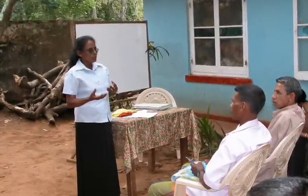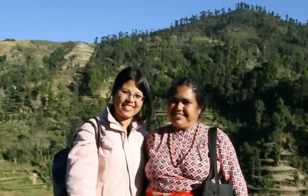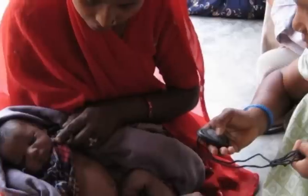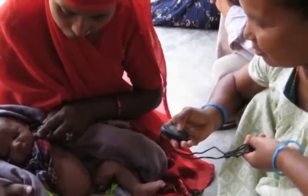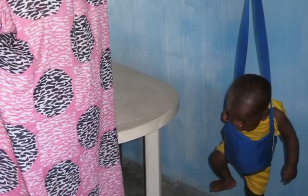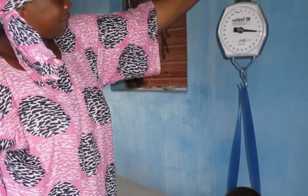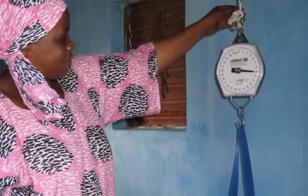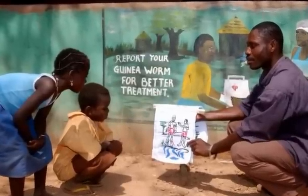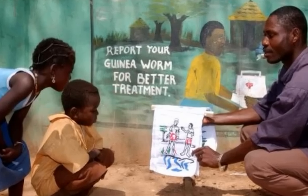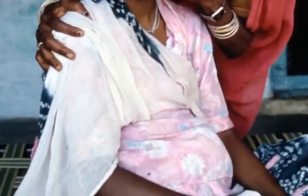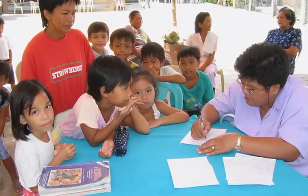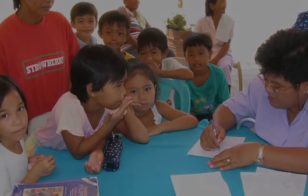Lay health workers go under many names, including community health workers, village health workers, treatment supporters and birth attendants. They have no formal professional education, but they have usually received a short amount of training. They sometimes take on tasks normally carried out by health professionals, but are often used to provide additional services such as outreach visits and health promotion. Lay health worker programs primarily aim to improve people's health, but they may also aim to empower a community by providing people with an opportunity to improve their own circumstances.